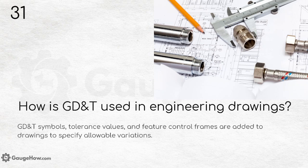How is GD&T used in engineering drawings? GD&T symbols, tolerance values, and feature control frames are added to drawings to specify allowable variations. If you are a beginner in engineering, make sure you learn the basic GD&T symbols so that you understand the scope of drawings better.